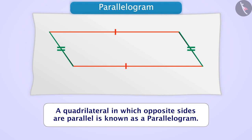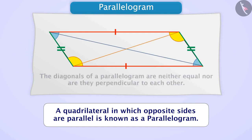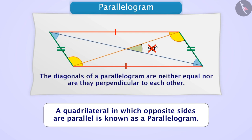Along with being parallel, the length of the opposite sides is also equal. Similarly, opposite angles of a parallelogram are also equal. But the diagonals of a parallelogram are neither equal nor are they perpendicular to each other.